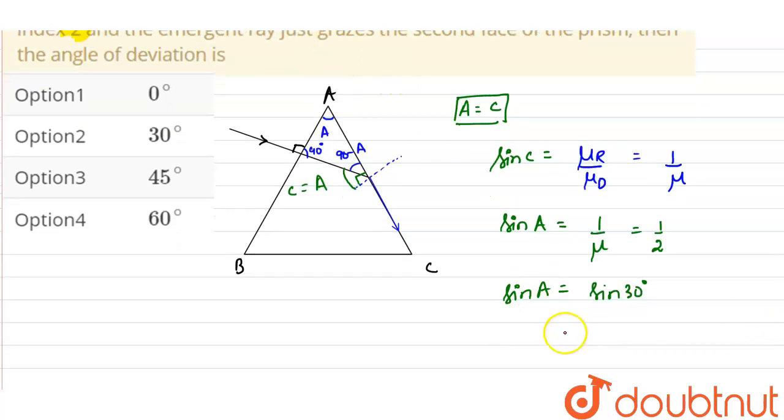Now the angle of deviation, the angle of deviation will be this angle, correct, that is 90 minus A.